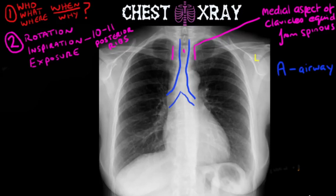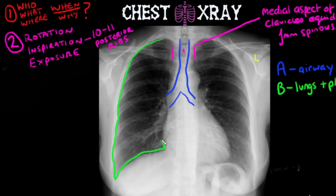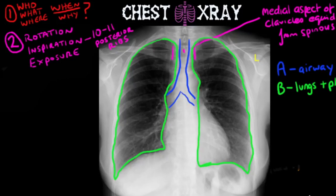Moving on to B: you are going to trace the lung fields and look at the pleural spaces as well. You are going to check that lung markings go all the way to the lateral aspect of the rib cage, and make sure there are no collections in the distal portions and no collapse of any lung segments. Compare each side and contrast — of course the patient can have bilateral pathology, but it is good to compare.